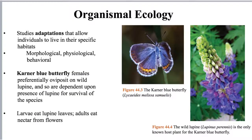Organismal ecology deals with individual organisms. These are studies that look at adaptations that allow individuals to live or to be a good fit in their specific habitats. Questions about organismal ecology can be morphological, so looking at form; physiological, so looking at function; or potentially behavioral, so the way that an organism acts within its environment.